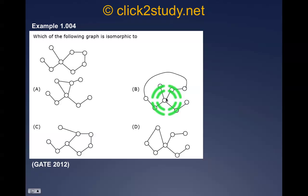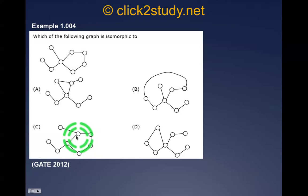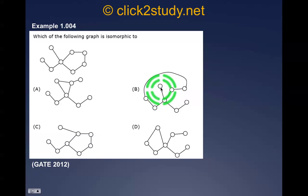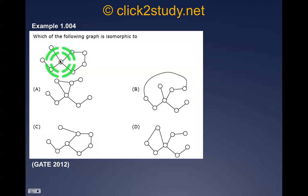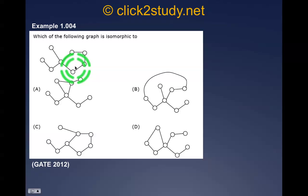Checking the remaining options: one graph does have a cycle of five vertices — vertices one through five — so it's a possibility. Another graph also has a cycle of five vertices, keeping it as a candidate. The fourth option has a cycle of four vertices, so it is eliminated as it cannot be isomorphic to a graph with a five-cycle.